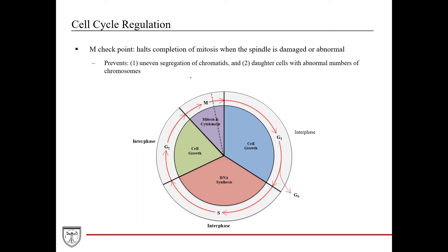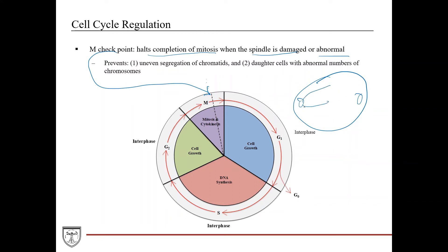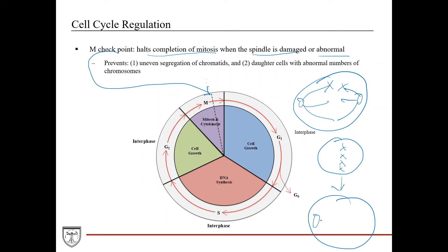Then you have the M checkpoint, which halts completion of mitosis if the spindle is damaged or abnormal. If you remember, you have your mitotic spindle formed of microtubules, and chromosomes are brought to the center during metaphase. In anaphase you start pulling them apart to their respective sides. A big function of the M checkpoint is to prevent uneven segregation of chromatids.